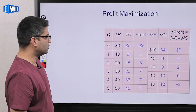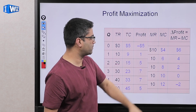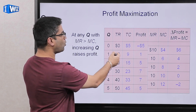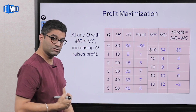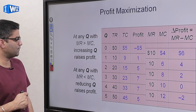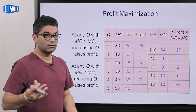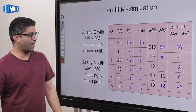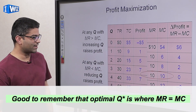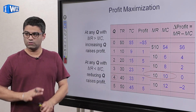To find the optimal quantity, look at the relationship between MR and MC. The last column shows the difference between MR and MC. If you're producing one unit, MR is more than MC — you should increase production. If you're producing five units, MC is more than MR — you should reduce production. The optimal quantity is where MR equals MC, and you can see profits are maximized at that point — in this case, you should produce four units.